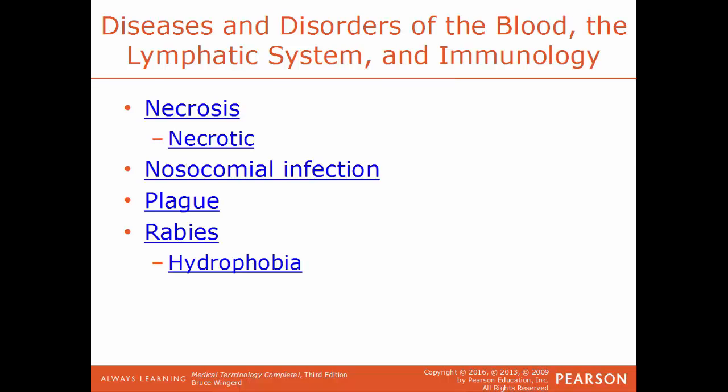Plague is a very contagious bacterial disease with multiple forms: bubonic plague, pneumonic plague, and septicemic plague. They affect different areas of the body but are all caused by a bacterial source.